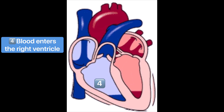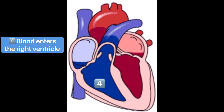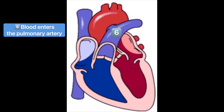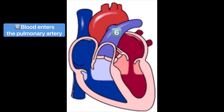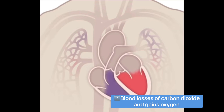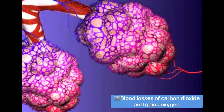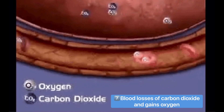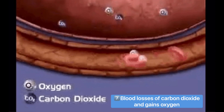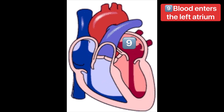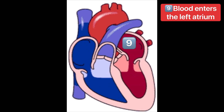After ventricular contraction, blood moves through the pulmonary valve and enters the pulmonary trunk and arteries, where it is carried to the lungs. Into the lungs, blood loses carbon dioxide and gains oxygen in the pulmonary capillaries. After that process, the oxygenated blood enters the pulmonary veins and then enters the left atrium.